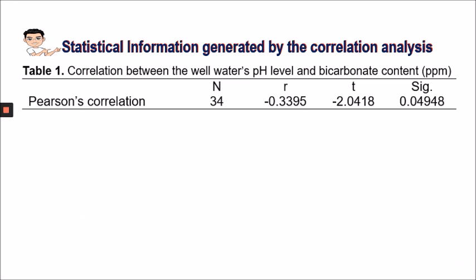This is the collated information in tabular form, where we have the value of n, r, t, and the p-value.